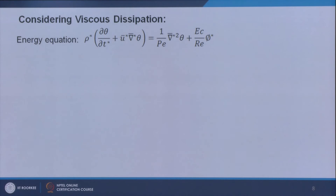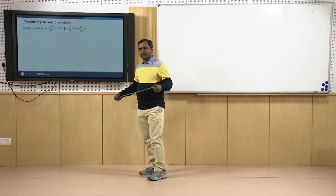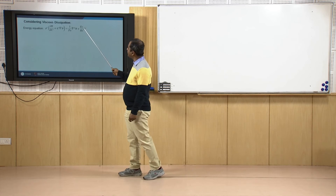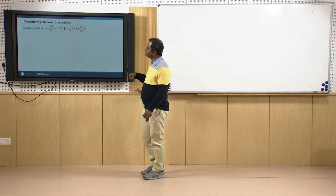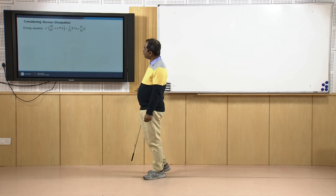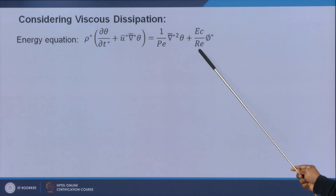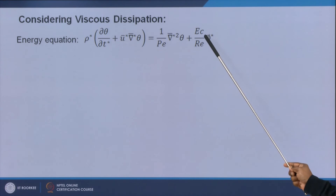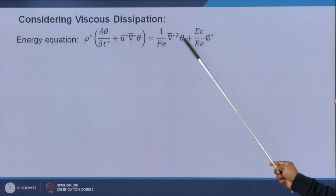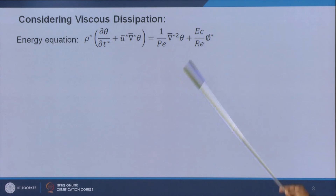Until now we have neglected viscous dissipation. If we consider viscous dissipation, a term involving Eckert number divided by Reynolds number times φ* appears in the energy equation and cannot be neglected for high Eckert number cases. Keeping this term alongside convection and conduction makes it important.